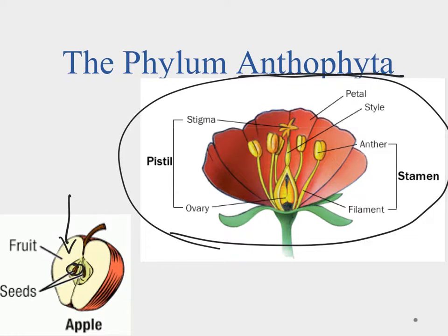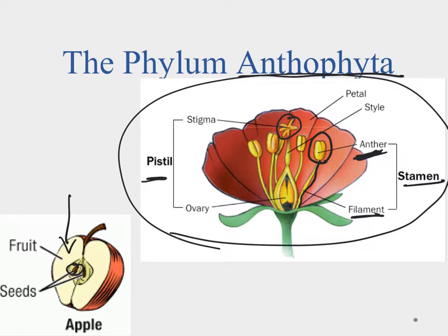The flower has the stamen and the pistil. The stamen is the male part — it has a filament extending up with the anther on top, where the male pollen is produced. A pollinator like a bug or bird coming in to feed will get pollen from the anther, then visit another flower where the pollen sticks to the stigma, which is sticky. The pollen transfers down the style into the ovary where fertilization occurs, and then the ovary swells and ripens into the fruit. That's how the flowering plants basically work.